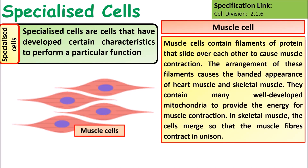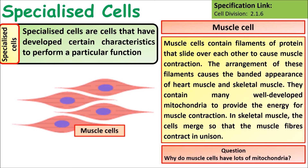Muscle cells contain fibrous proteins — actin and myosin — that slide over each other and allow for muscle contraction. The arrangement of these filaments causes the banded appearance of heart and skeletal muscle. They contain many well-developed mitochondria to provide energy for muscular contraction. In skeletal muscle, cells merge so that muscle fibres contract in unison. Think about why muscle cells have lots of mitochondria.